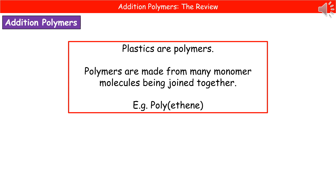Welcome to our review on addition polymers. One of the most common things in your everyday life is the material of plastic, and plastics are polymers. The way that we make a polymer is by joining many monomer molecules together. A good example of this is polyethene — the same stuff used in carrier bags — which is a polymer made from many monomer molecules being joined together.